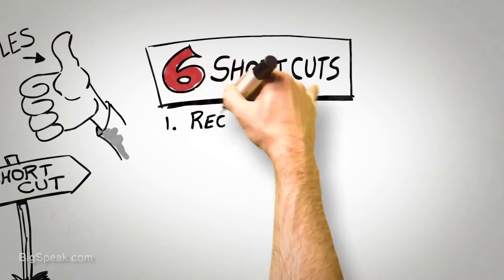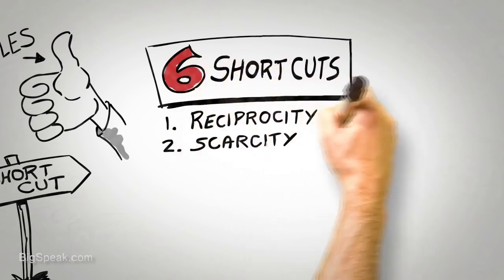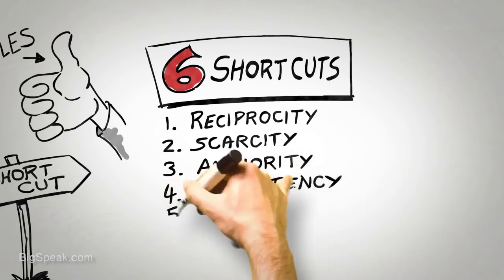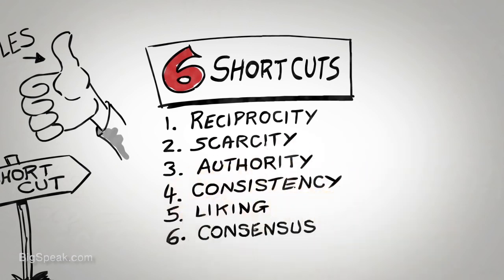They are reciprocity, scarcity, authority, consistency, liking, and consensus. Understanding these shortcuts and employing them in an ethical manner can significantly increase the chances that someone will be persuaded by your request. Let's take a closer look at each in turn.